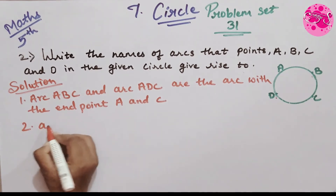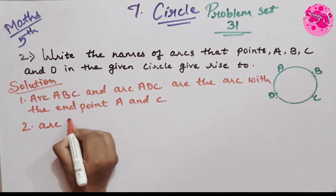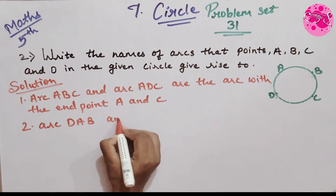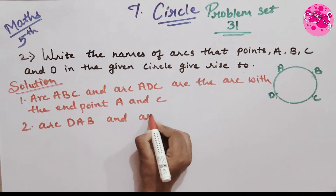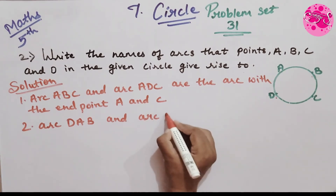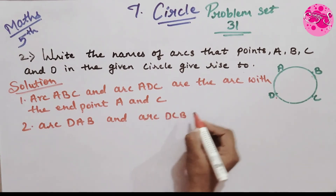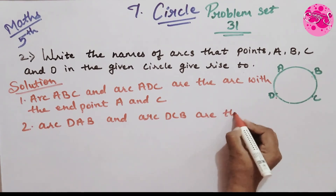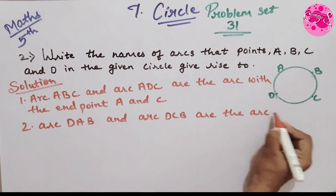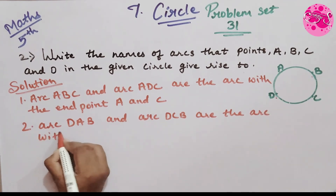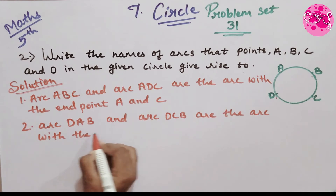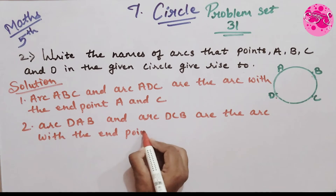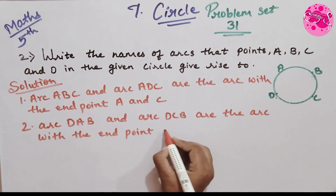The arcs with endpoints B and D are: arc DAB and arc BCD. These are the arcs with the endpoints B and D.